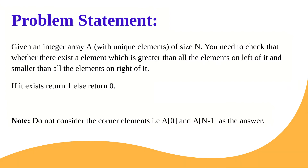The problem statement: we are given an integer array A with unique elements of size N. We need to check whether there exists an element which is greater than all the elements on its left and smaller than all the elements on its right. We need to find the peak of the array such that all elements on its left are smaller than it and all elements on its right are greater than it. If it exists, return 1, else return 0.